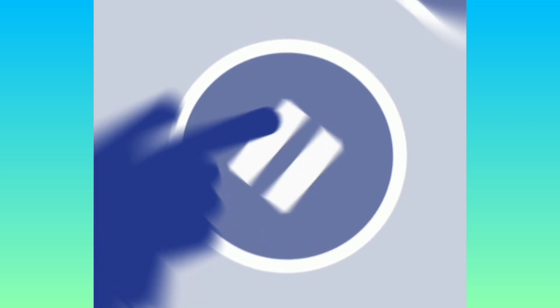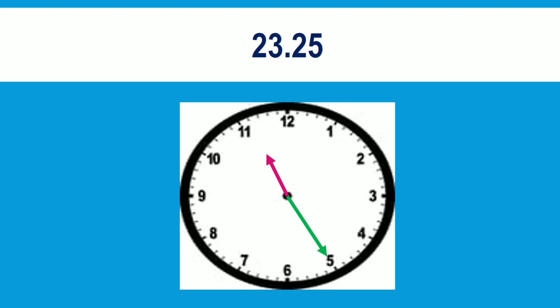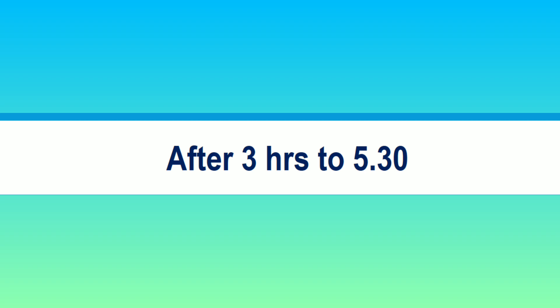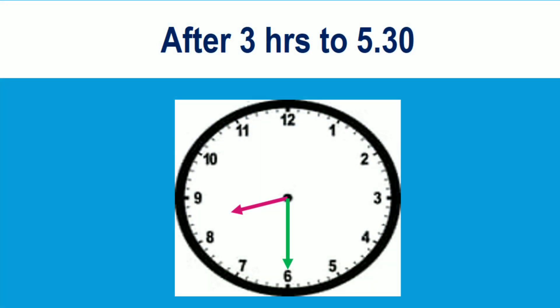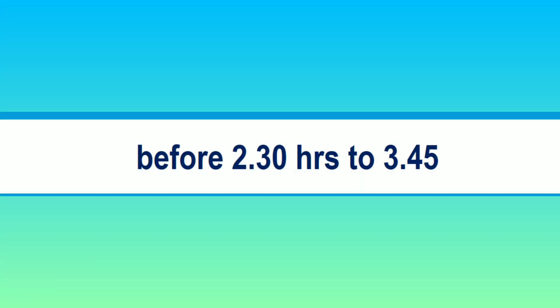Next example: after three hours, two thirty — children, pause the video. Yes, the time is eight hours thirty minutes. Good children! The next one is before two hours thirty — to three forty five. Pause the video, setting the time in the clock.